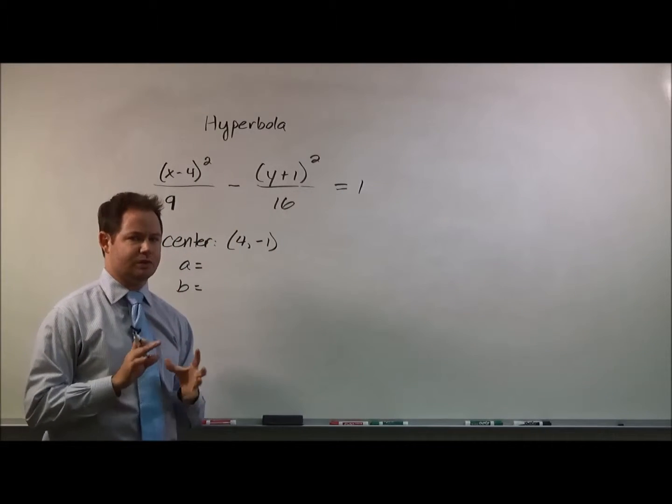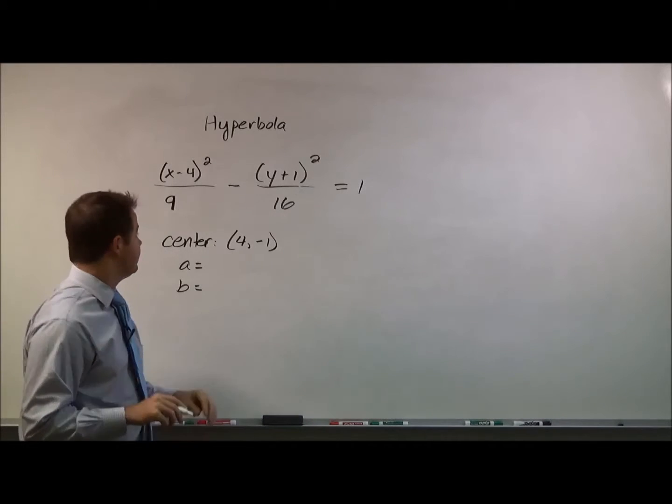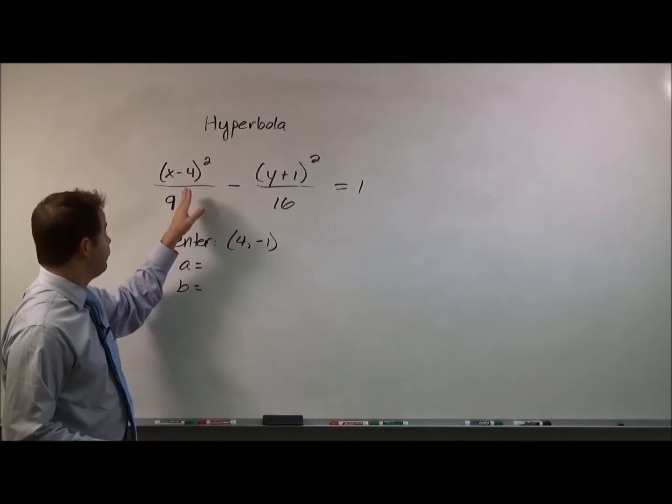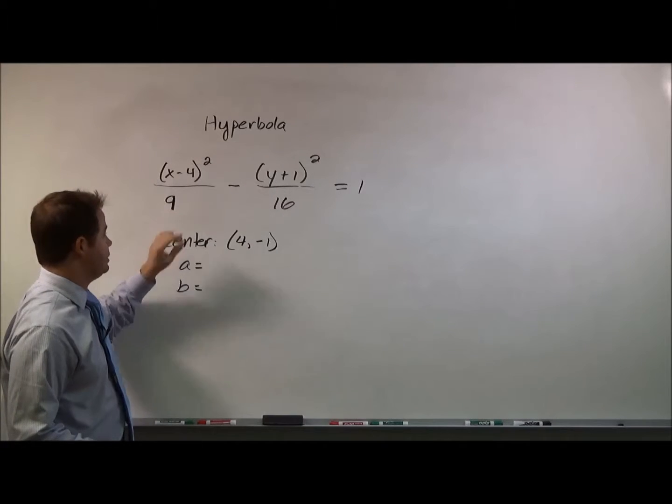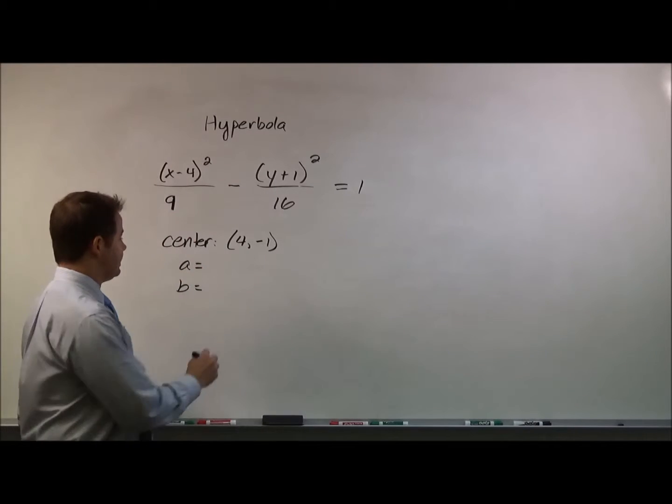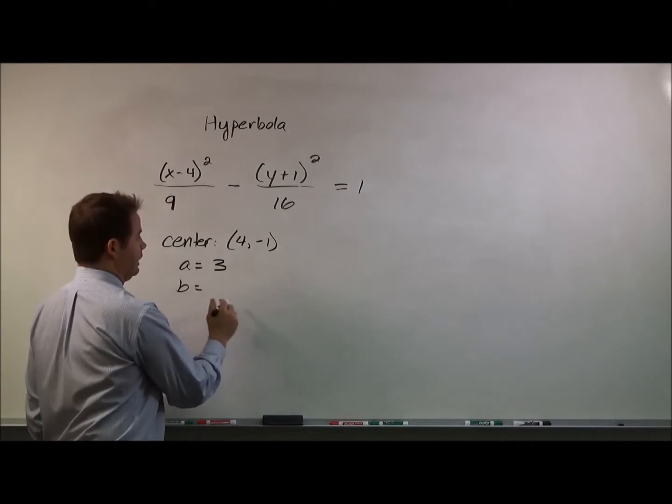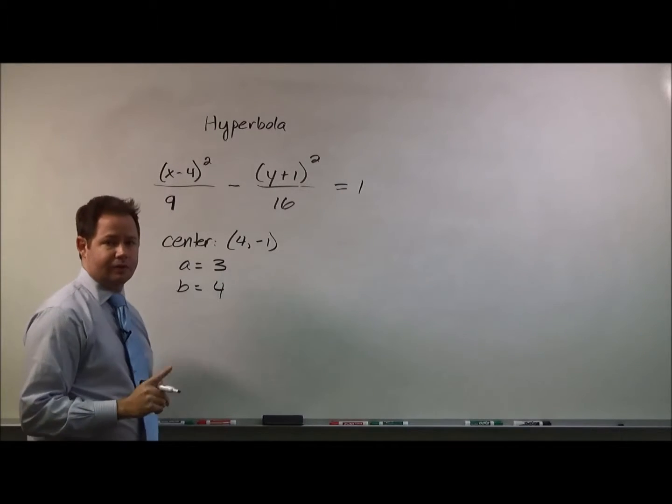So here a would be four and b would be three if this were an ellipse. But for a hyperbola, it works a little bit differently. For hyperbolas, a squared is always the denominator of the first term in your expression. A squared always goes first. So a squared is nine, which means a is three and b is four for this.